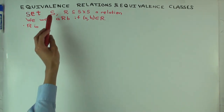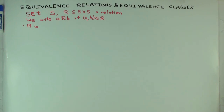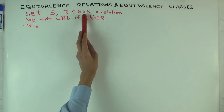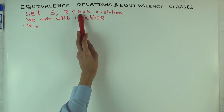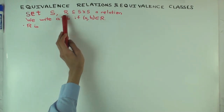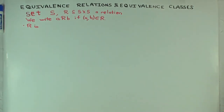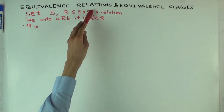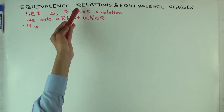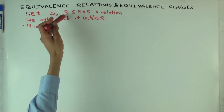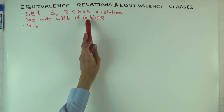We begin with a set S and a relation on the set. What's a relation? A relation is just a subset of S cross S. That means for every pair of elements A and B in S, either that pair satisfies the relation — in which case that pair is in the subset — or it doesn't, in which case that pair is not in the subset.